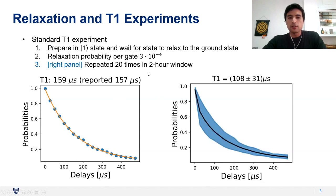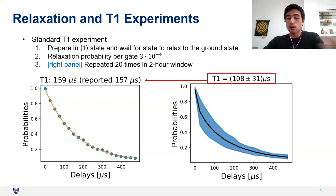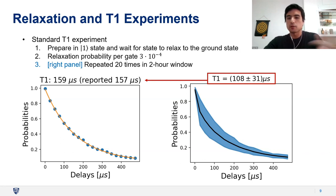However, when we repeated this experiment 20 times over a two-hour window, we found a mean T1 time of 108 microseconds plus or minus 30 — which is far from the reported value. The take-home message is that IBM's calibration is typically done less often than the characteristic fluctuation times of the noise parameters, suggesting we need to characterize more frequently for accurate noise mitigation.